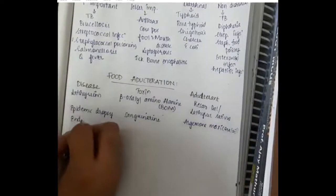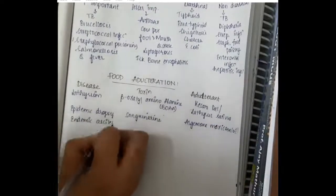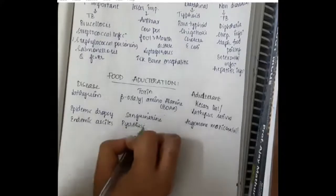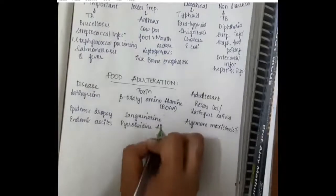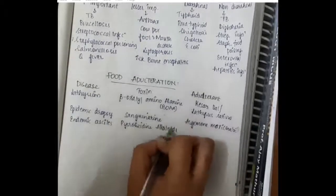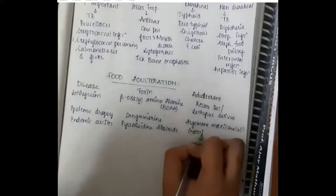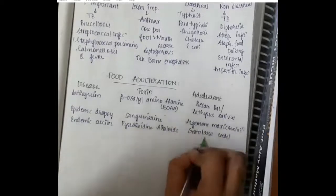Then for endemic ascites, toxin is pyrrolizidine alkaloids and adulterant is crotalaria seeds or junjunia.